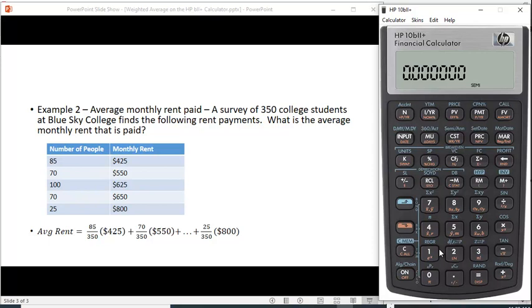Let's see if we can put this in correctly. I've cleared everything. $425 is the first X variable, input, and 85 is the number of people, sigma plus. And then $550 is the amount of rent that the second group paid, input, and there were 70 of them who paid that, sigma plus. The third group paid $625, input, and there were 100 of them, sigma plus.